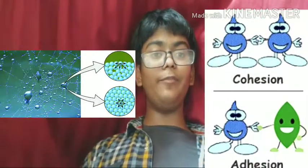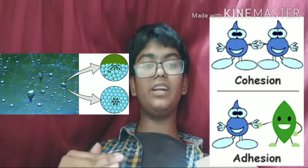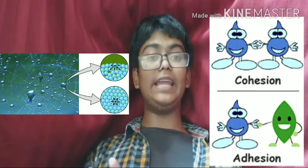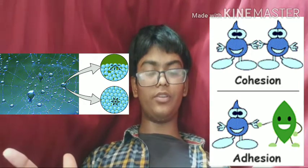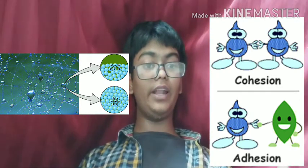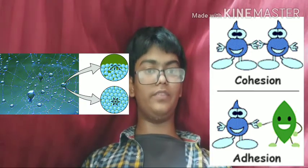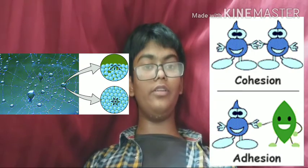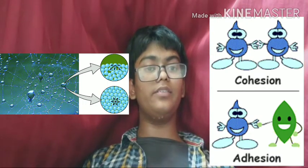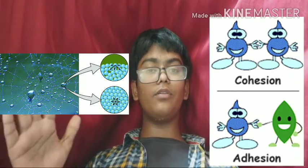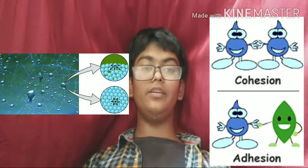Cohesion is the tendency of like molecules to join together — for example, water molecules joining with water molecules. Adhesion is the tendency of different molecules to stay together at a surface — for example, water on the xylem vessel wall.